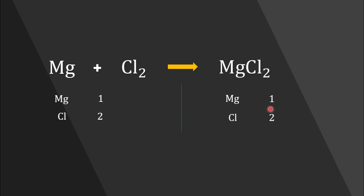We have one magnesium atom in the reactant side and one magnesium atom in the product side, so the number of magnesium atoms is equal on both sides of the reaction. Similarly, chlorine is also balanced — two on both sides. Hence our equation is balanced and there is no need to add any coefficient.